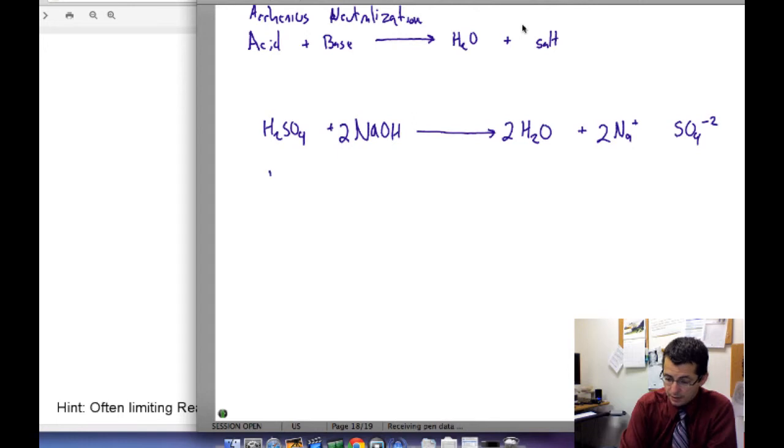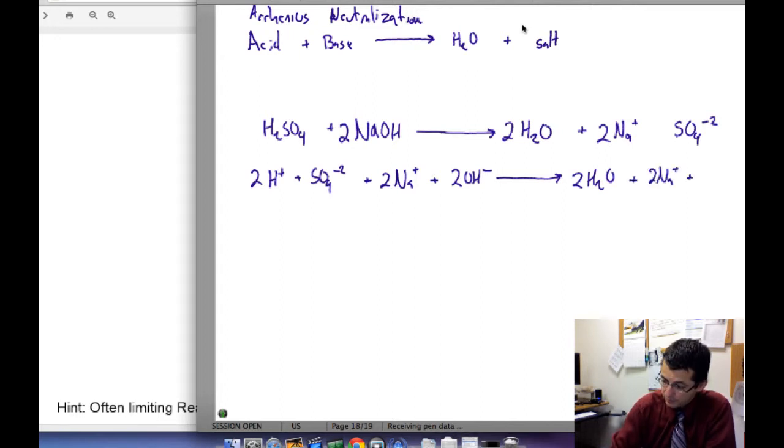We can show the ionic equation: 2H+ + SO4^2- + 2Na+ + 2OH- going to 2H2O + 2Na+ + SO4^2-. Water comes out as a liquid, everything else is aqueous. This would be the ionic equation.